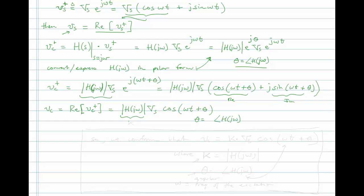This right here is k. And what we have found is that, let me write this one more time. So we confirm that Vc is equal to k times the amplitude of the excitation Vs cosine omega t, same frequency as excitation, plus theta, where k is equal to the magnitude of the transfer function, and theta is the angle of the transfer function.